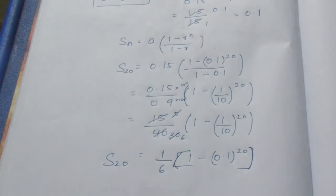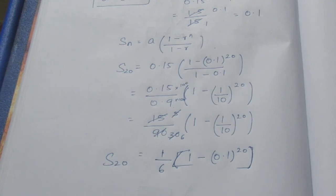So the final answer for S20, that is the sum of the 20 terms, is 1 by 6 times [1 minus (0.1) to the power 20]. That's all with the sum. Thank you.